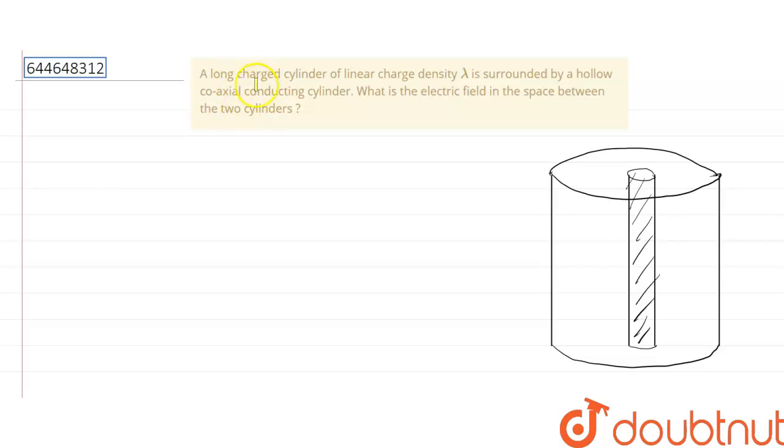The given question is: a long charged cylinder of linear charge density lambda is surrounded by a hollow coaxial conducting cylinder. What is the electric field in the space between the two cylinders?